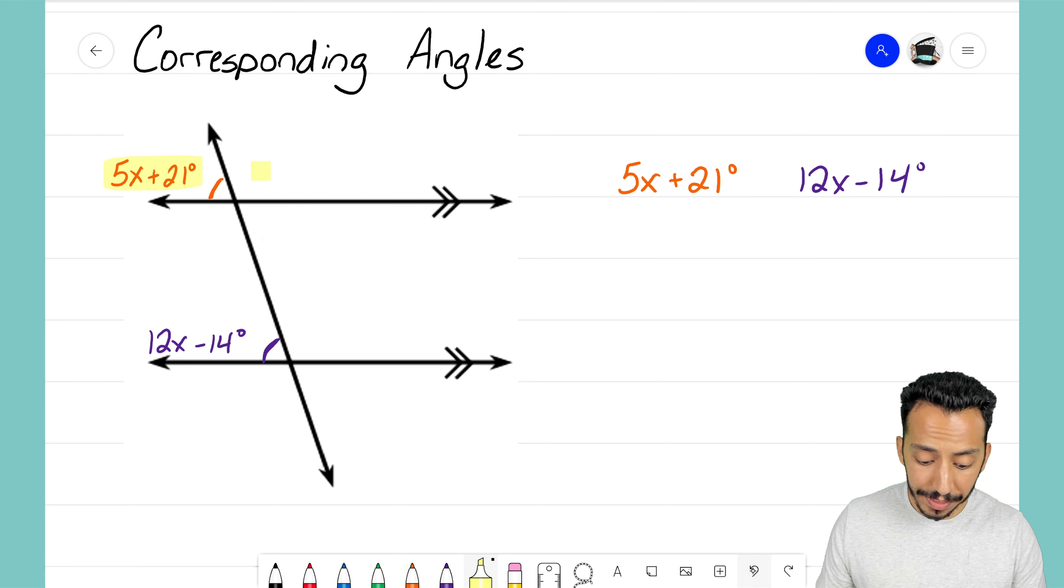Now when I go and look at the bottom set of angles, and I look at my 12x minus 14 degrees, I notice that that one is also in the top left position. So because those two angles are in the same position, but just different locations along that transversal, it means that those two angles are equal.